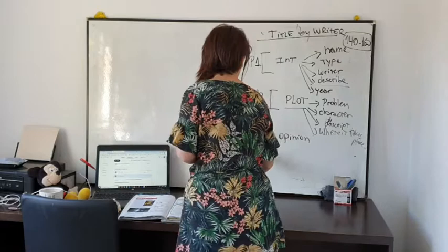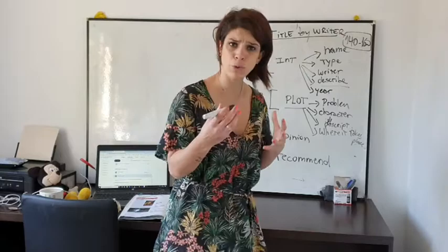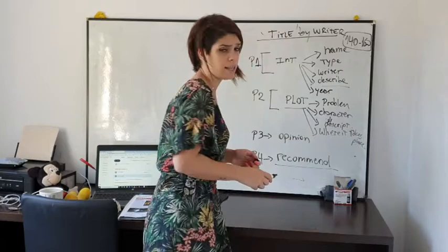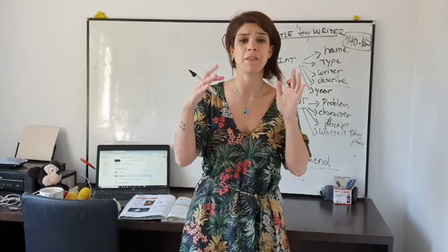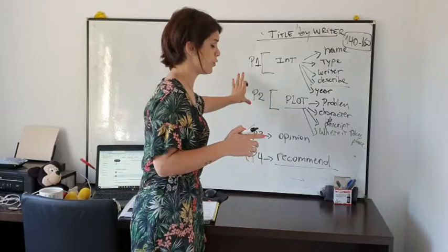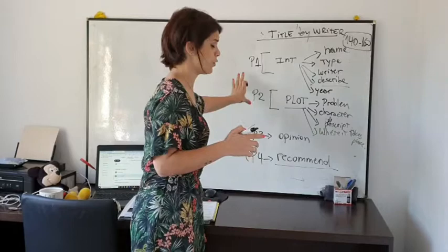Then paragraph four is your conclusion, where you include a recommendation. You have to say to whom you recommend the story — maybe you think it's for teenagers, or for adults, or for children. These last two paragraphs should be shorter than the first two. Try to bear that in mind — maybe around 20 words each, or up to 50 words. The idea is to follow this overall schema.